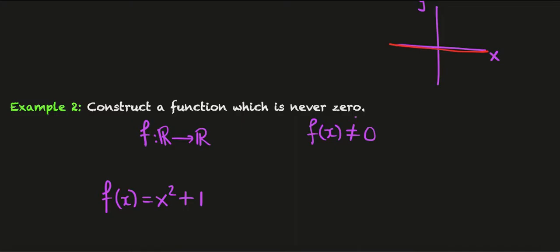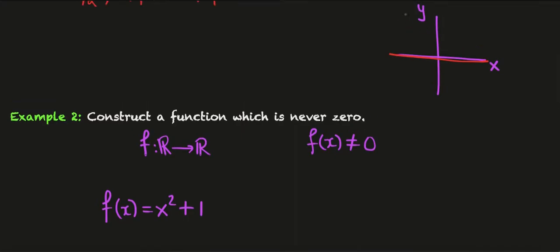The function x squared will pass through zero, passes through the origin, so if I bump it up a little bit by one then it will never intersect the x-axis and that does exactly what I want.